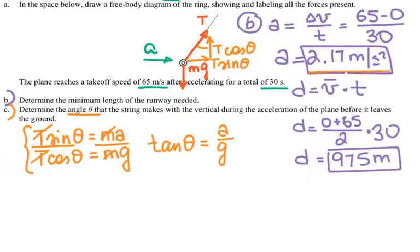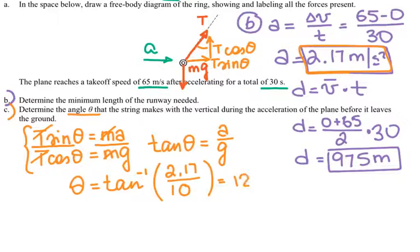And I just found what a is equal to, 2.17. So theta is equal to arc tangent, or tangent to the negative one—it's not the power, just the negative one inverse function on your calculator. And a is 2.17 divided by g, which is 10, so I have to take arc tangent of this angle, and that will be about 12.5 degrees.